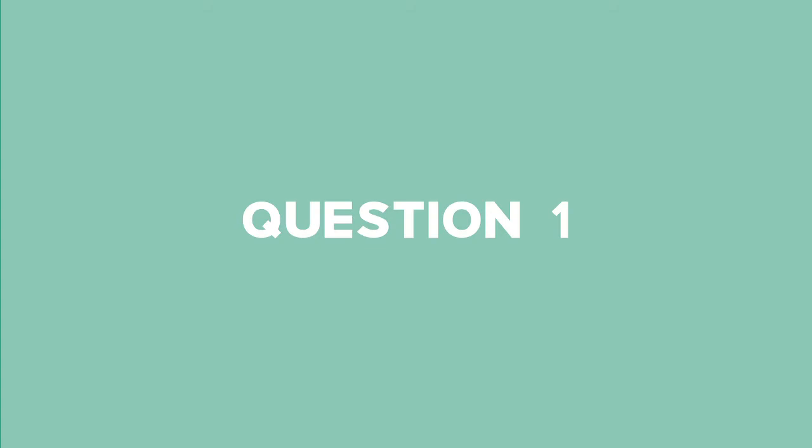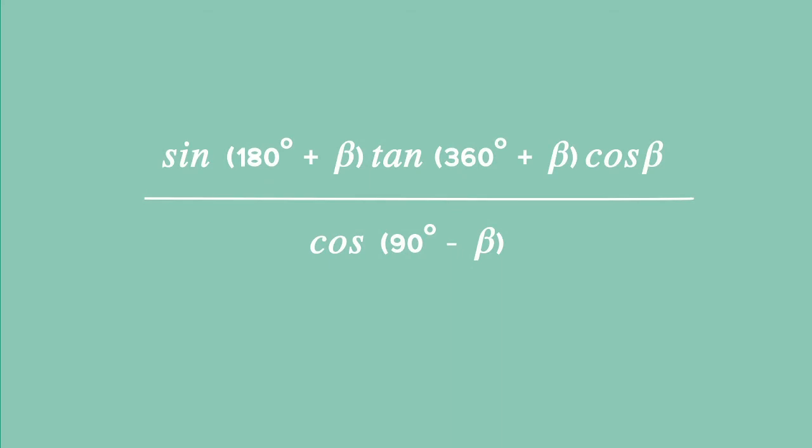We're going to look at question 1 of reduction formula. We've been asked to simplify this expression: sine of 180 plus beta multiplied by tan of 360 plus beta multiplied by cos of beta all divided by cos of 90 minus beta. We can see that it's been written in a form in which we need to use reduction formulae.